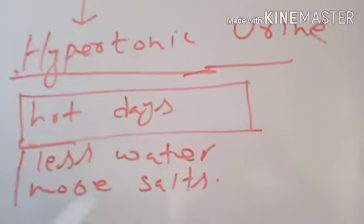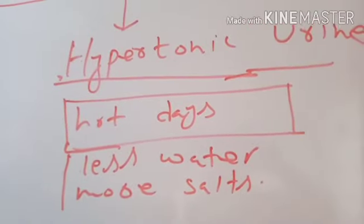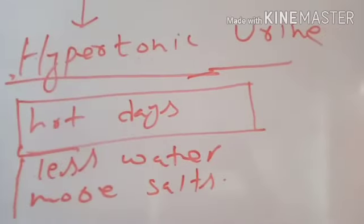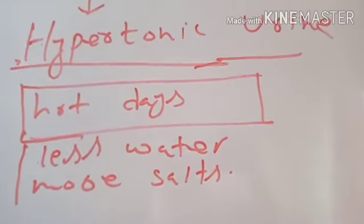And hence by production of hypertonic and hypotonic urine, kidneys help in osmoregulation.